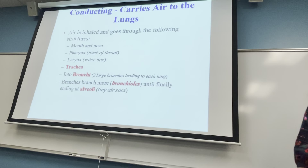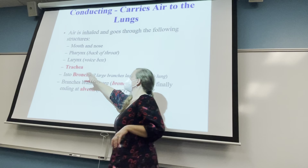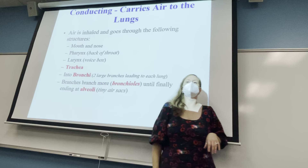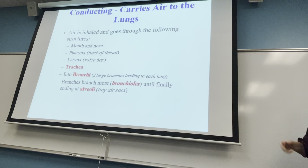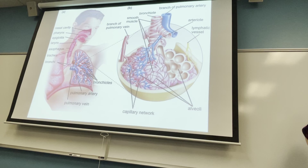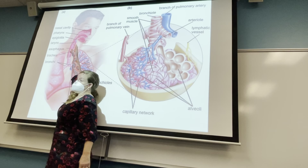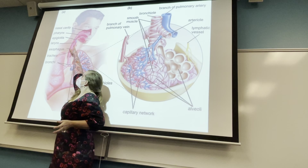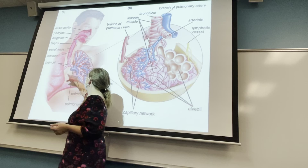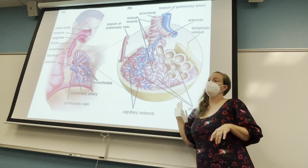The bronchi branch into even smaller branches called bronchioles, and at the end of the bronchioles you have millions of tiny air sacs — alveoli — throughout the lungs. This branching structure provides increasing surface area at each level: trachea to bronchi to bronchioles to millions of alveoli. Air comes in through the mouth and nose, the epiglottis is open, it goes down the trachea and branches into bronchi, then bronchioles, ending at the alveoli.